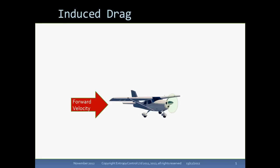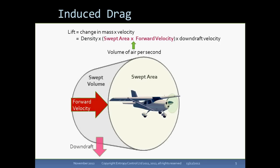So let's start with lift-dependent drag on an aircraft in steady flight. The aircraft keeps up by grabbing a certain amount of air and pushing it down. The lift is given by Newton's second law, which is that the mass of air pushed down times the downdraft velocity equals the lift. And of course in steady flight the lift equals the weight of the aircraft.